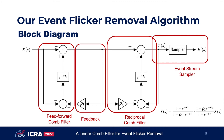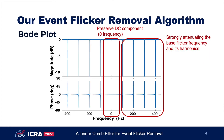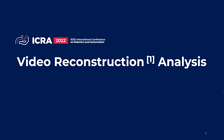Finally, an event sampler is applied at the output to generate a filtered event stream. The Bode plot shows that our filter strongly attenuates all harmonics of the base frequency and is effective at passing the DC component of a signal.